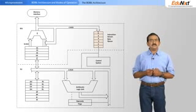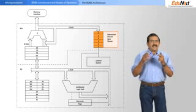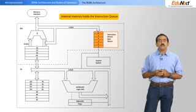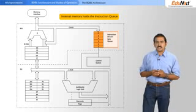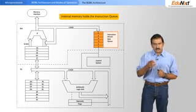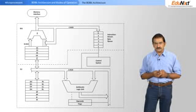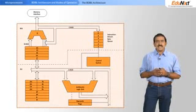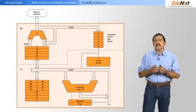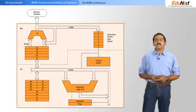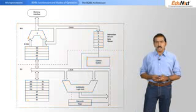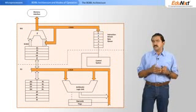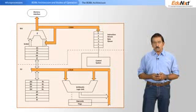Interestingly, there is a set of internal memory that holds what's called the instruction queue, and we'll talk about this a little later. This is the insides of the processor. All of this together accesses the outside world either through an address bus, the data bus, or the I/O ports.